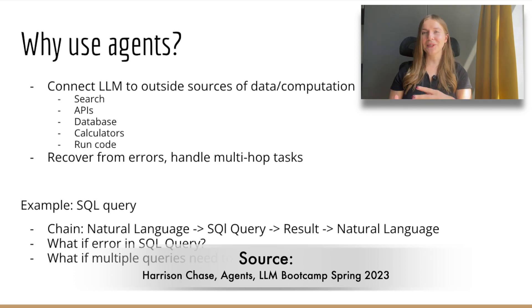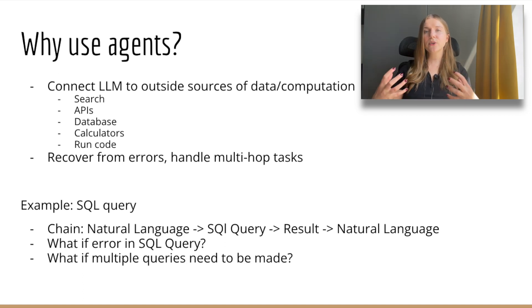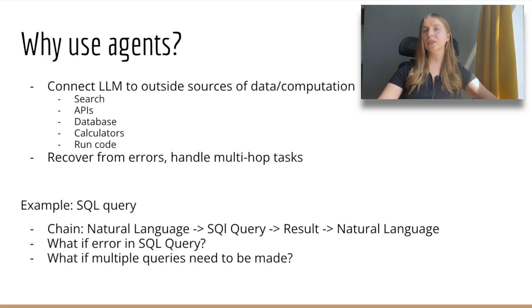I'm particularly excited about agents. Agents connect LLMs to external sources of data and tools such as search engines, APIs, databases, calculators, or code execution tools. Agents enhance large language models where their biggest weaknesses are — for example, plugging into a calculator to help the model perform complex mathematical tasks that LLMs wouldn't otherwise be good at. They also give LLMs flexibility to recover from errors and better handle complex multi-step tasks. A great example of an agent is AutoGPT, which is designed for open-ended tasks, has long-term memory, and retains it across interactions between the agent and the tools.